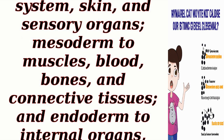Ectoderm gives rise to the nervous system, skin, and sensory organs; mesoderm gives rise to muscles, blood, bones, and connective tissues; and endoderm gives rise to internal organs such as the liver, pancreas, and gut.